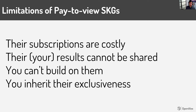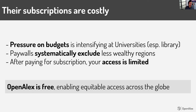The first limitation is that subscriptions are costly; results can't be shared; you can't build on some of these other databases; and you inherit their biases. On subscriptions — there's increasing pressure on library budgets at universities around the world, and these subscriptions go up every year. We're also systematically excluding less wealthy regions of the world from access to databases that could really help them develop their science and technology infrastructure. Even after you subscribe, you still don't have access to the full database and have to pay for more. OpenAlex, on the other hand, is completely free and enables equitable access around the world.